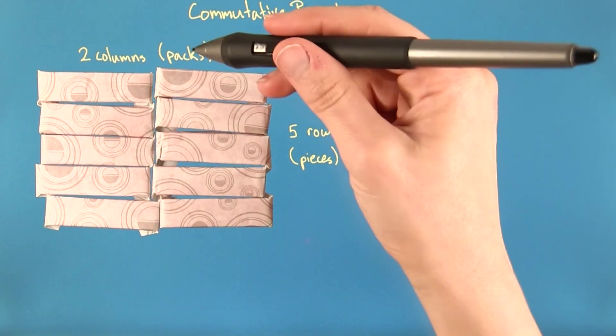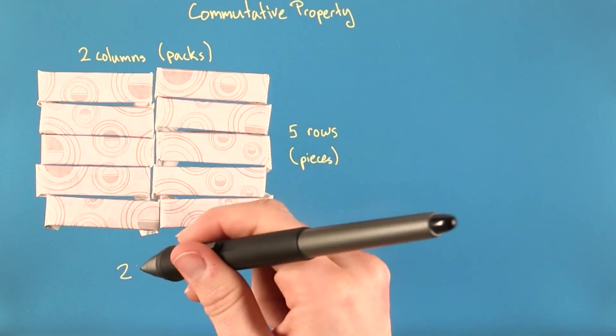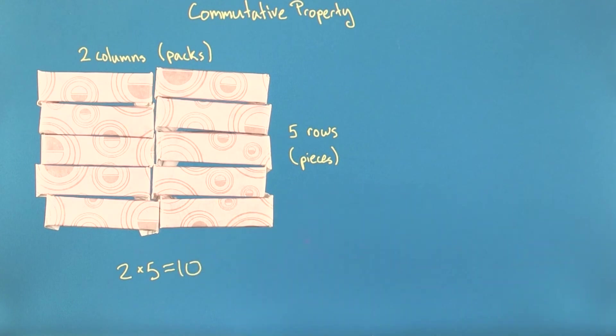To find the total number of sticks of gum, I can multiply the number of packs of gum, which is two, by the number of sticks per pack, which is five, and that gives ten. So I have ten sticks of gum.